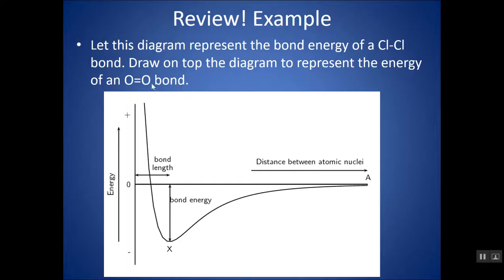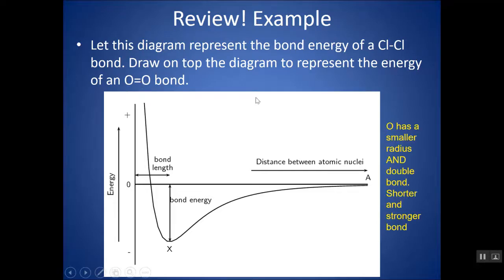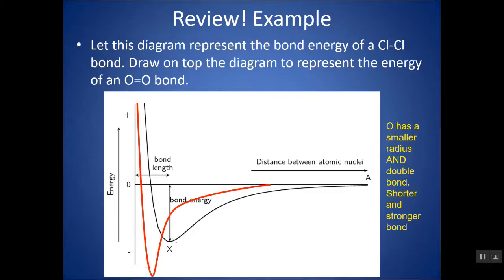Now let's draw a diagram for an O=O double bond. Oxygen has a smaller radius — fewer energy levels and shells — and there's a double bond, which increases electron density and allows the nuclei to get closer. In both respects, it's a shorter and stronger bond than Cl-Cl. So on the diagram, bond length shifts left and bond energy dips deeper — into negative values — because it shows the energy released when the bond is formed, which is exothermic.